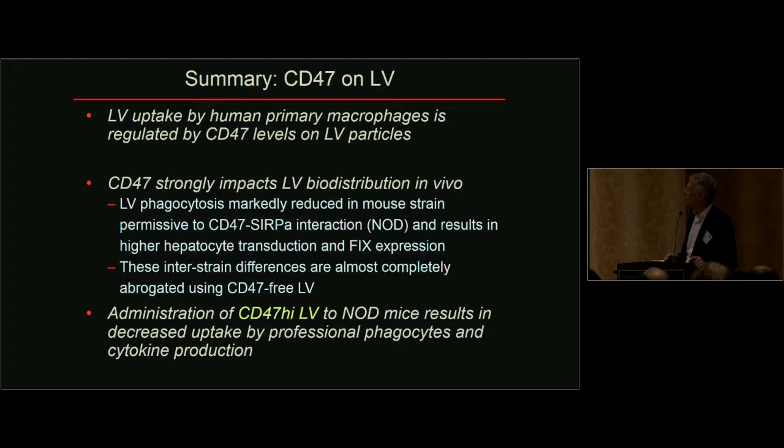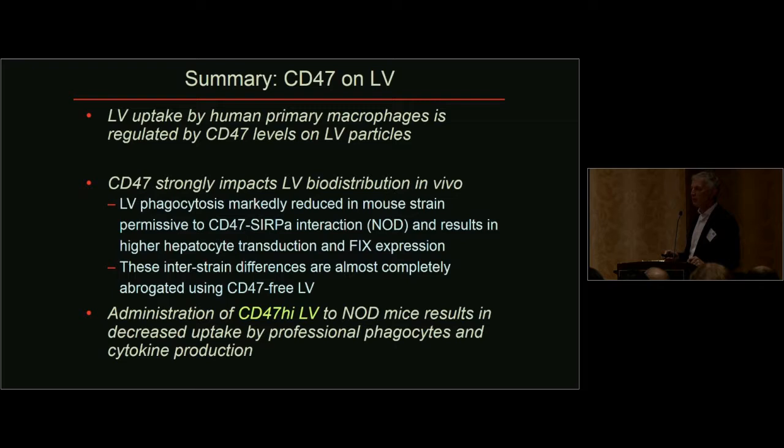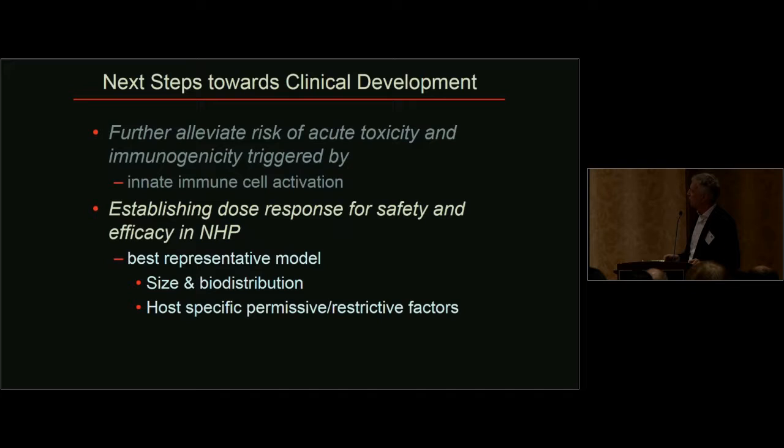Looking at the inflammatory reaction in mice by monitoring cytokine spikes — IL-6, MCP-1, MIP-1α — we see a spike of IL-6 after vector administration to C57BL/6 mice. In NOD mice with the same dosing, there is much less innate response. If we remove CD47, the vector shows the same spike as seen in C57BL/6. If we overexpress CD47, we lower that response. The innate response can be modulated by the extent of phagocytosis, giving both the benefit of improved biodistribution to target cells and less inflammatory reaction.